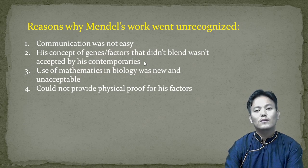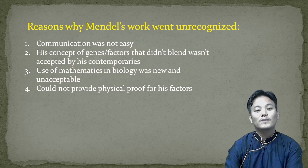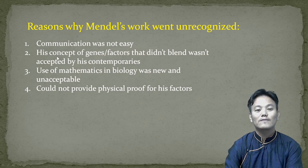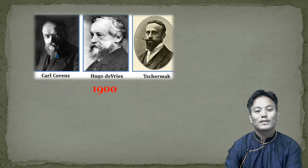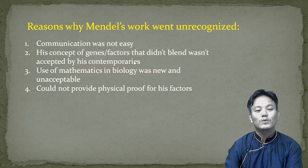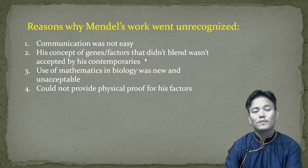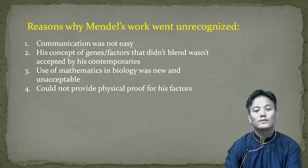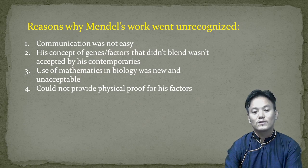The second reason was his concept of genes or factors that didn't blend wasn't accepted by his contemporaries. Scientists of Mendel's time believed that in hybridization, characters tend to blend, which is why we see so many variations in our surroundings. However, Mendel proposed that characters are passed down from parents to offspring through stable factors which remain unchanged. This was not accepted by his contemporaries.